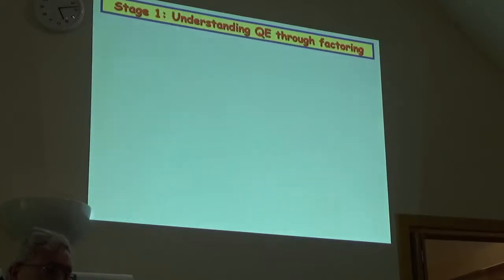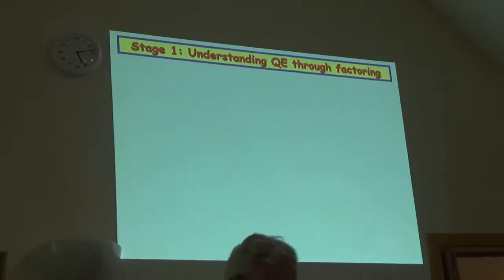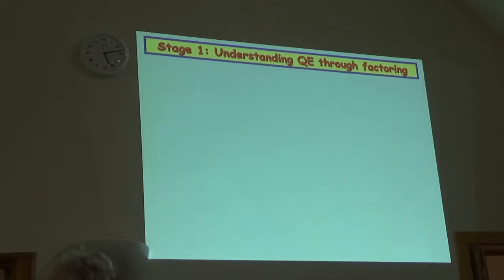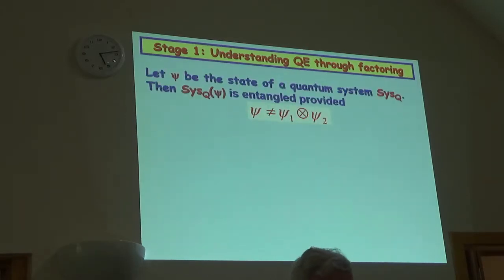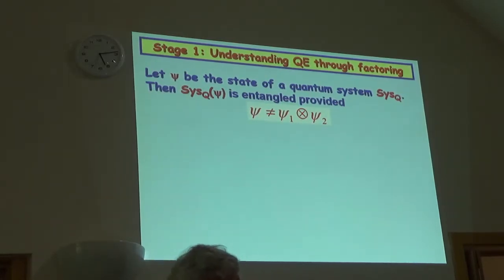Now, I'd just like to backtrack just a little bit and use sort of an example of how all these ideas evolve. First of all, one way of thinking about quantum entanglement is through factoring. This is the simplest form of definition. We'll let psi be the state of the quantum system. And then the quantum system is entangled if and only if it can't be factored, the state can't be factored into a tensor product of two states. This is one of the simplest definitions. But not, in my opinion, not the best.